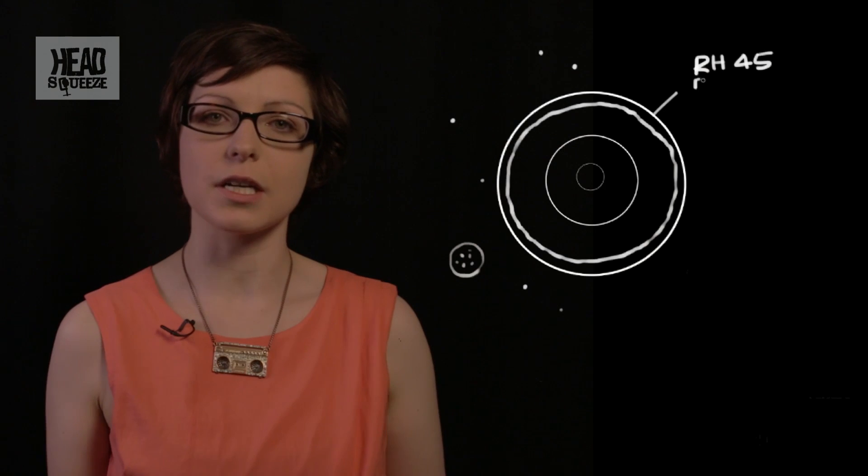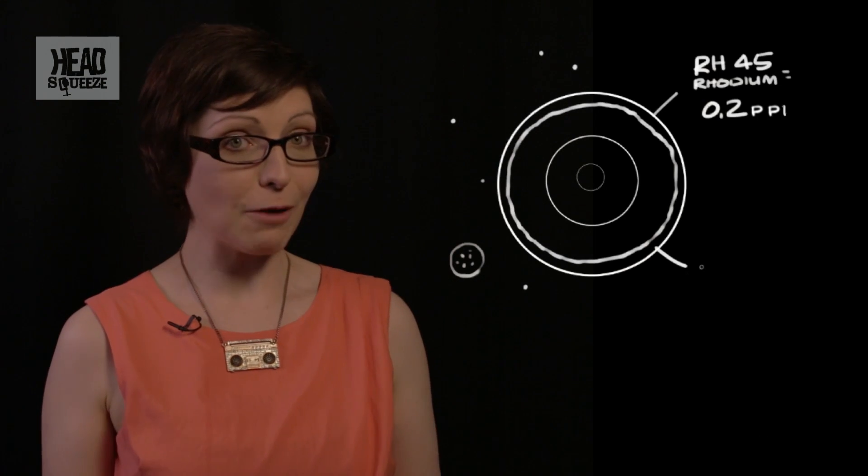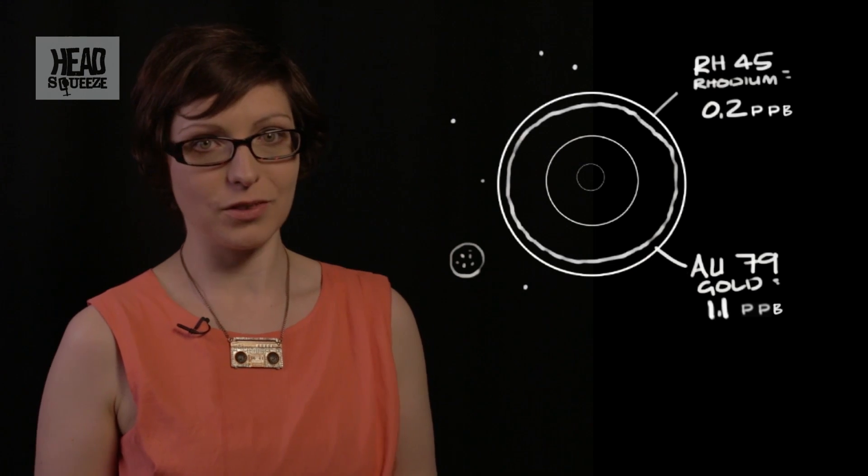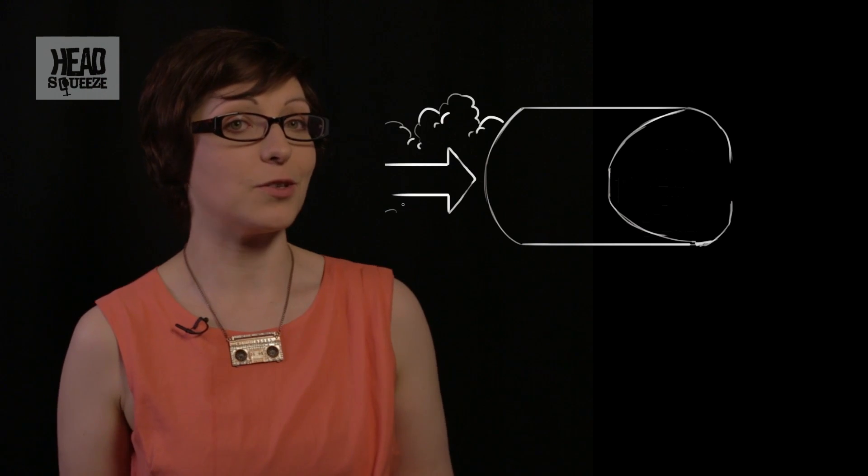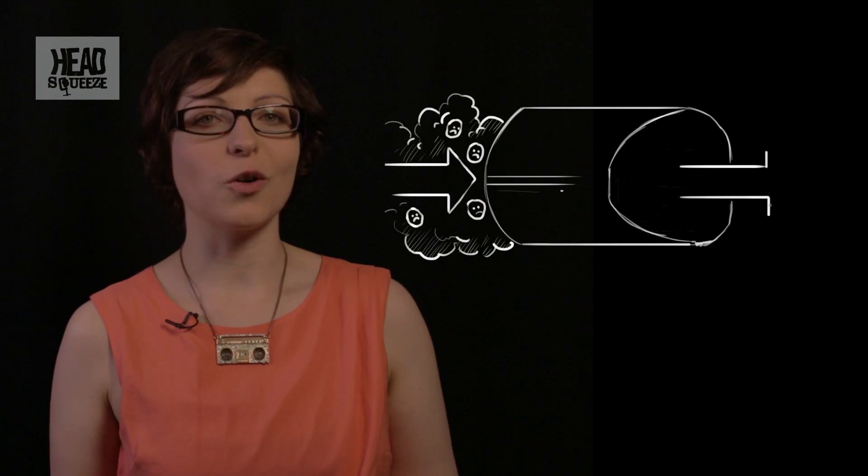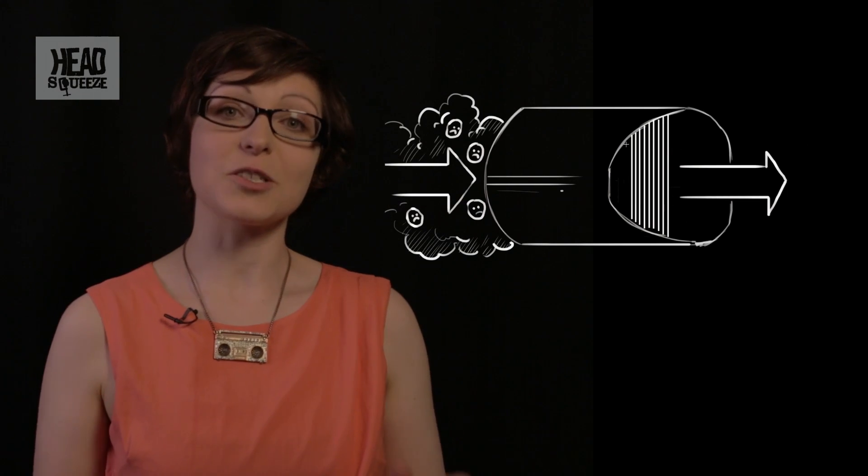Rhodium is estimated at about 0.2 parts per billion in the earth's crust. That makes it five times rarer than gold, which only has 1.1 parts per billion. And you might not have heard of it but you've probably used it today already because 80 percent of all rhodium is used in catalytic converters.